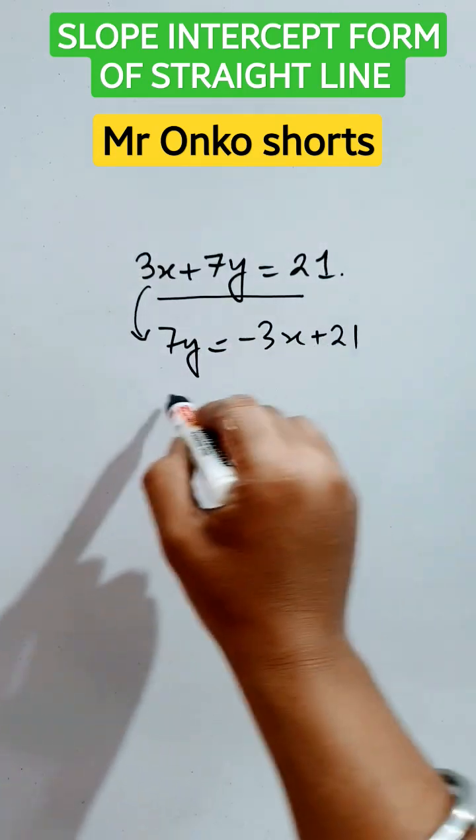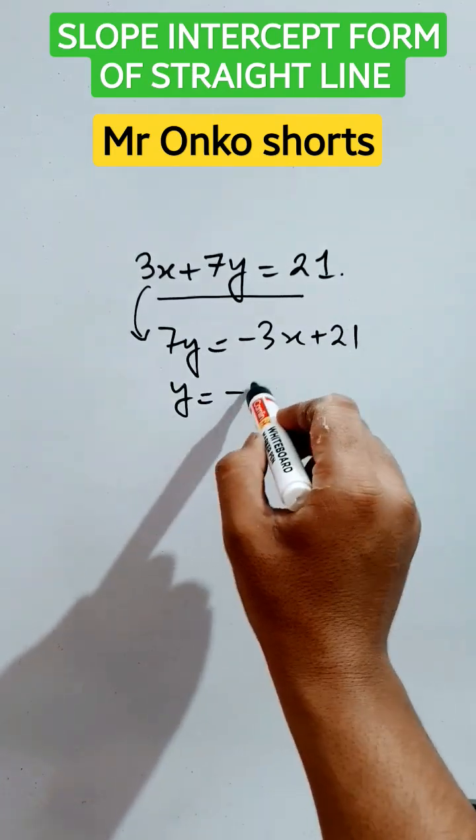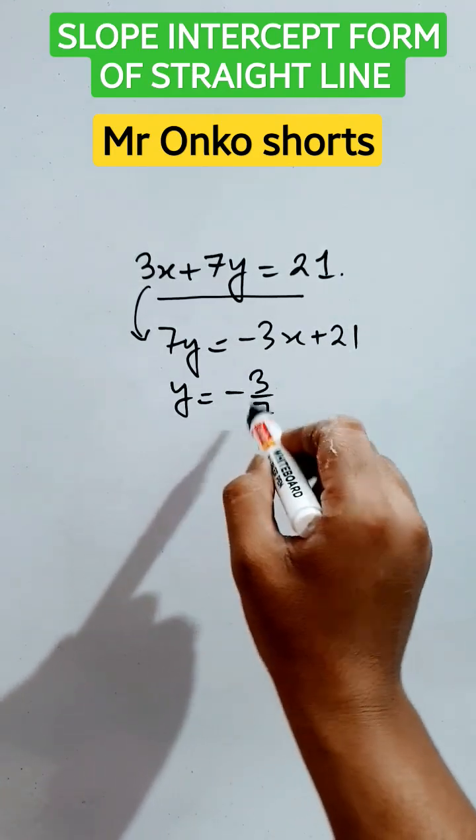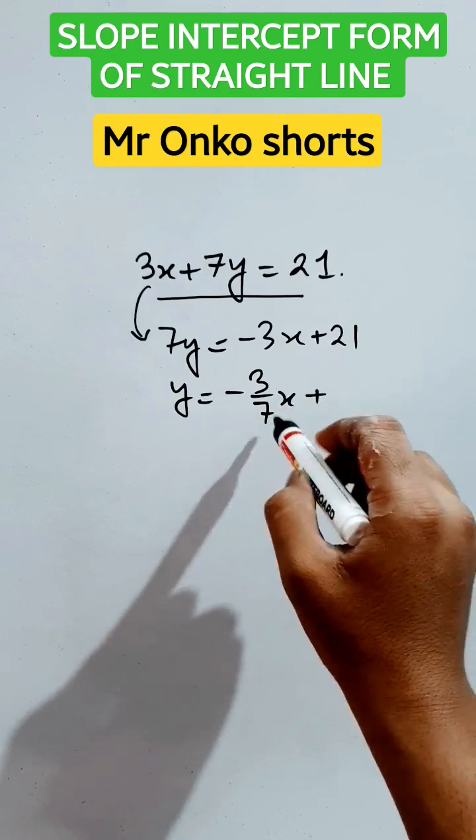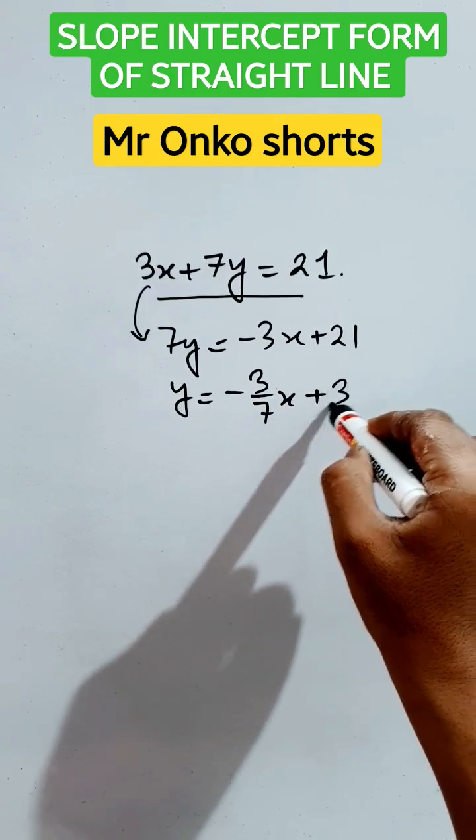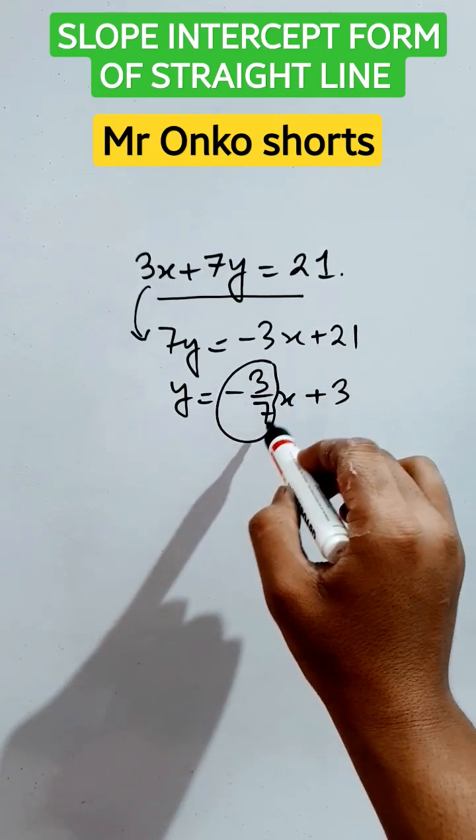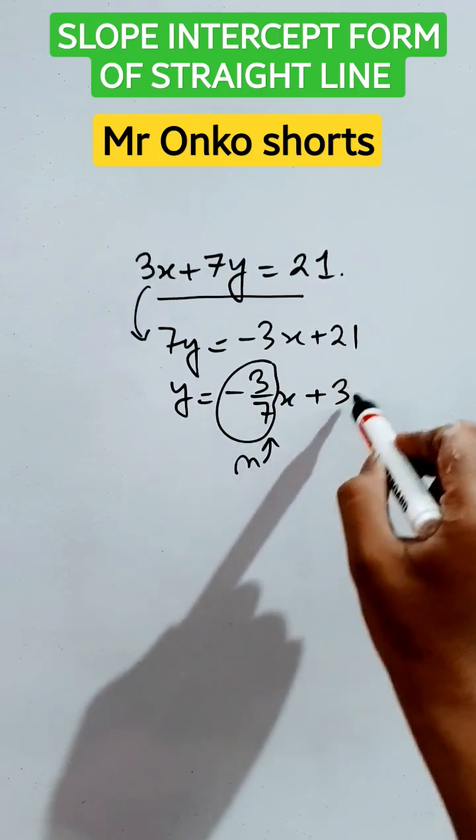Divide both sides by 7. It will be y = (-3/7)x + 3. So here, -3/7 is the slope of the given straight line, and 3 is the intercept made by the straight line with the y-axis.